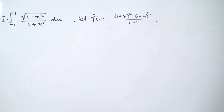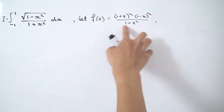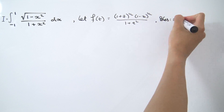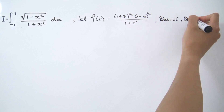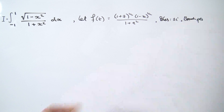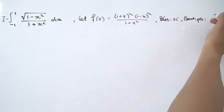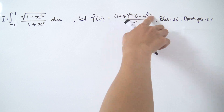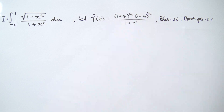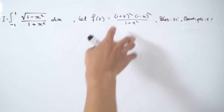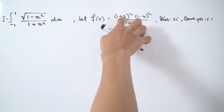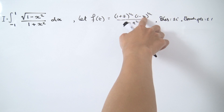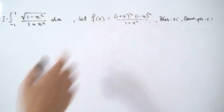Note that we have some poles and branch cuts. The poles come from the denominator, so poles are at plus or minus i. The branch points are going to be plus or minus one, because these factors have fractional powers, and whenever you have fractional powers you have branch cuts. The branch points are wherever the insides equal zero: z equals negative one and z equals positive one.